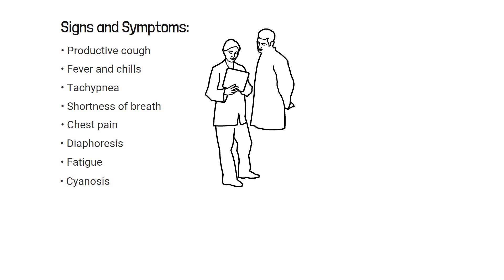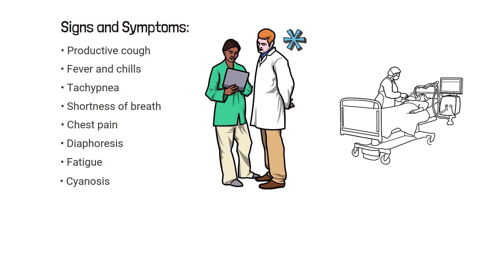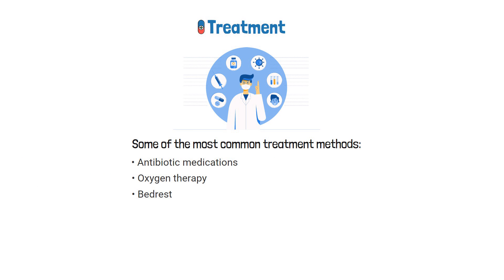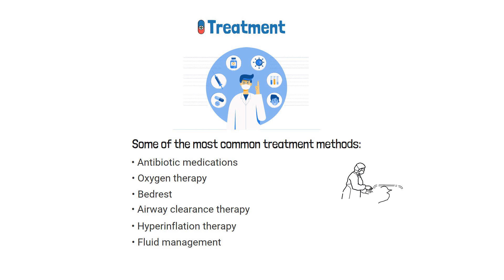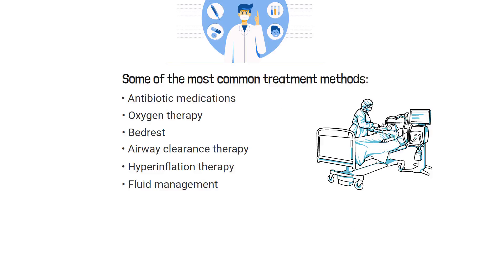Being able to recognize the signs and symptoms is important for diagnosis, treatment, and patient outcome. Pneumonia in general should be treated on a case-by-case basis. Some of the most common treatment methods include antibiotic medications, oxygen therapy, bed rest, airway clearance therapy, hyperinflation therapy, and fluid management. Each patient may require different treatment modalities, and in severe cases intubation and mechanical ventilation may be indicated.